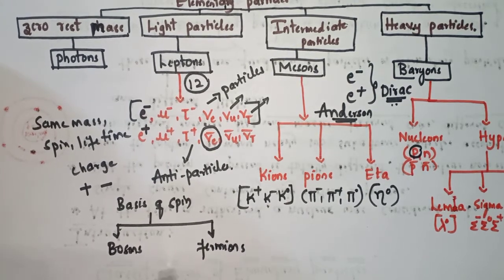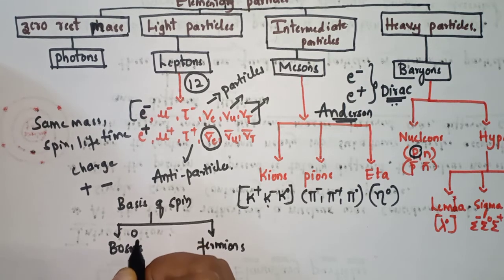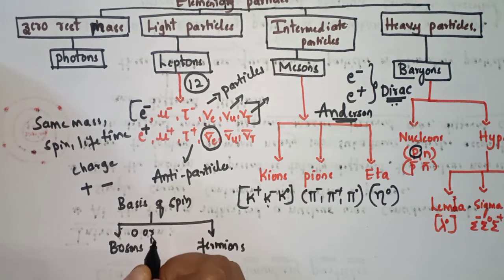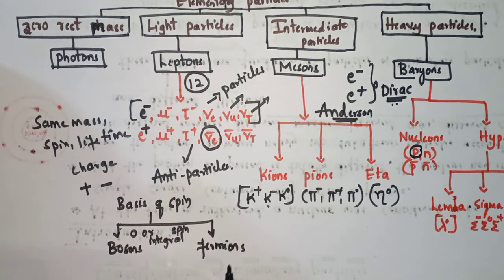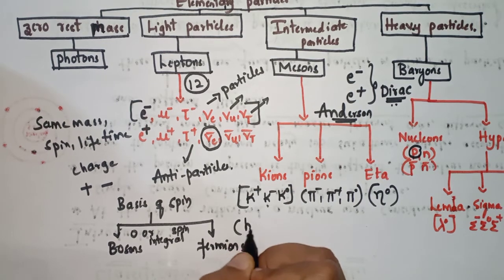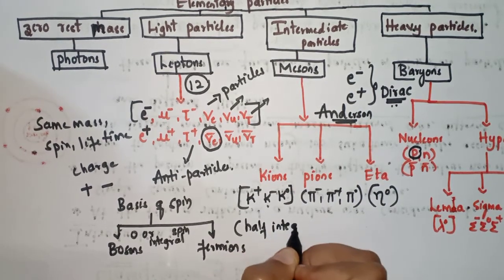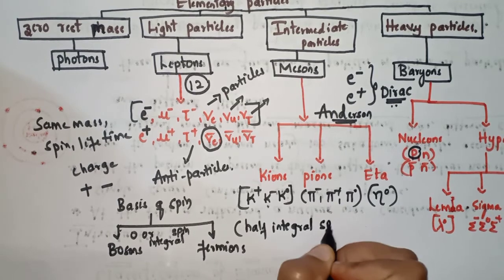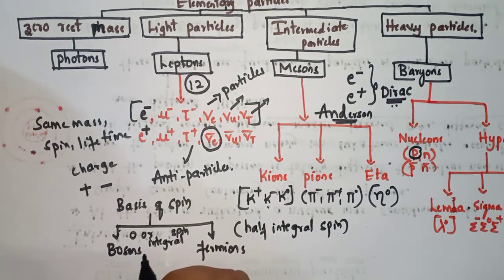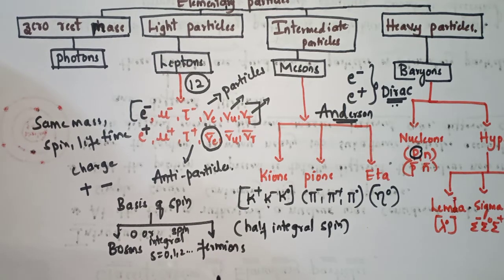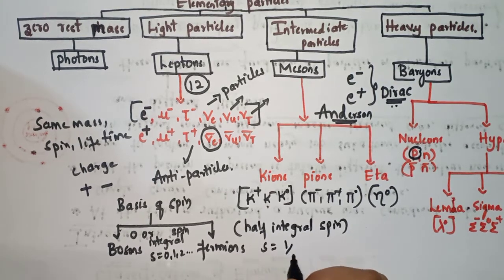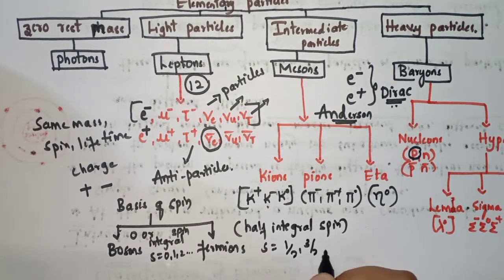For bosons, spin s = 0, 1, 2, etc. For fermions, spin s = 1/2, 3/2, etc. Bosons are further classified into massless bosons and mesons. Massless bosons are photons and gravitons. Mesons are classified into kaons, pions, and eta mesons — kaons are K+, K−, K0 and pions are π+, π−, π0.